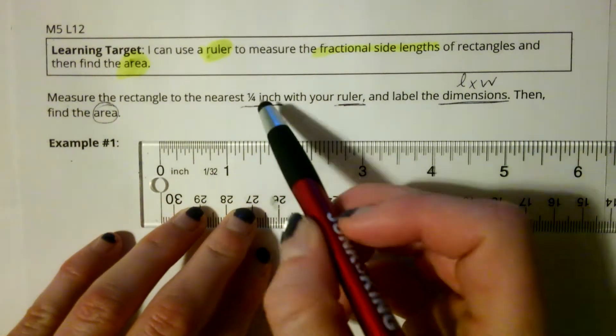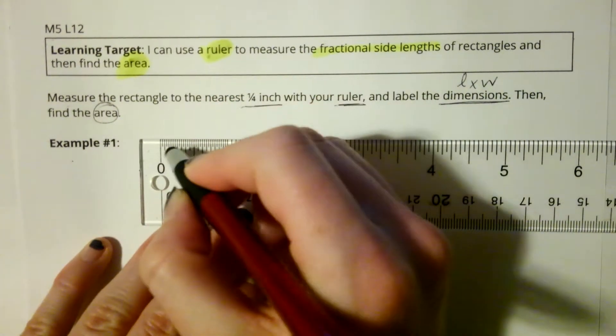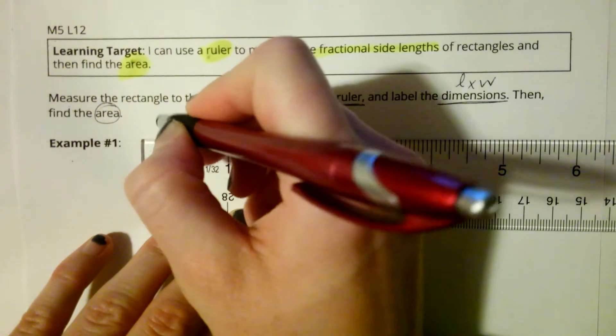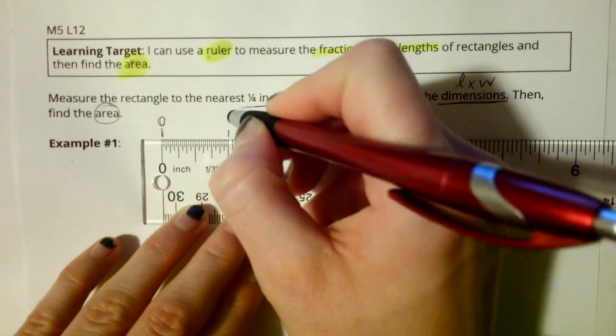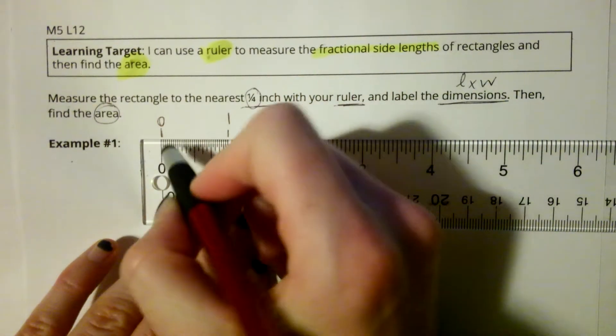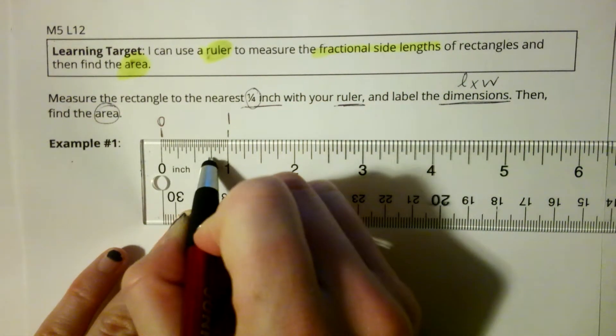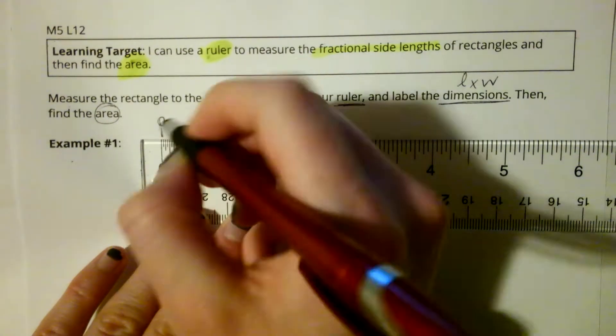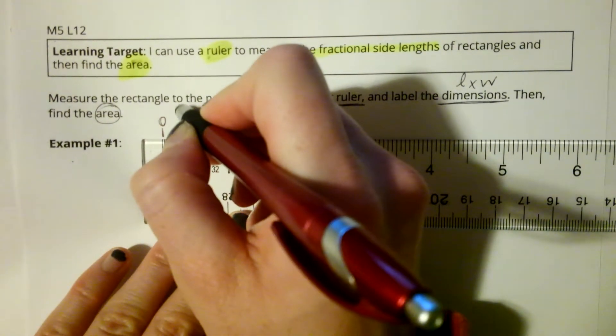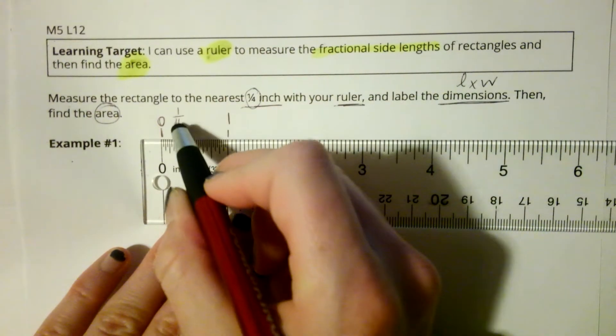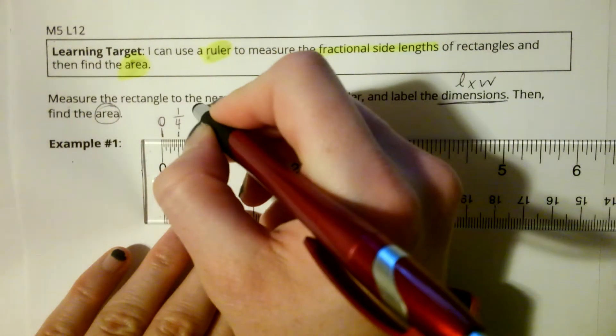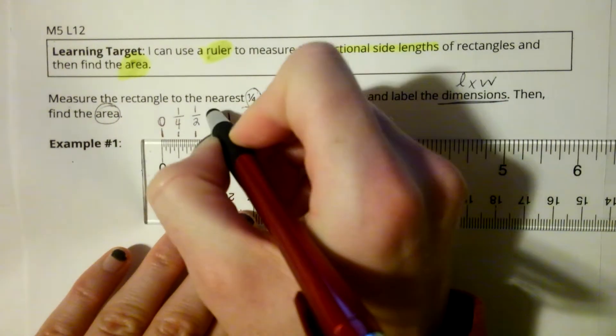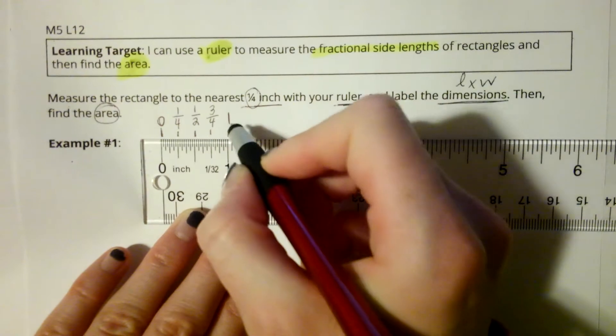When we measure something to the nearest one-fourth inch, that means every quarter inch, that's going to be a mark. So if we start at zero inches and let's go to one inch, we're going to go every fourth inch. If you notice on a ruler, there are three places in between each inch where the line is a little bit longer. This first one represents one-fourth, think about quarters, one-fourth, two-fourths or I could reduce that to one-half, and then this next longer line is going to be three-fourths, and then one.